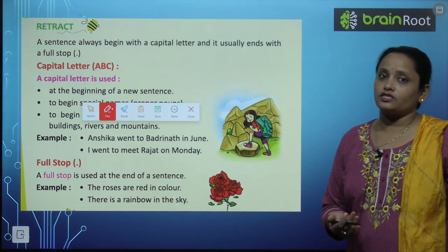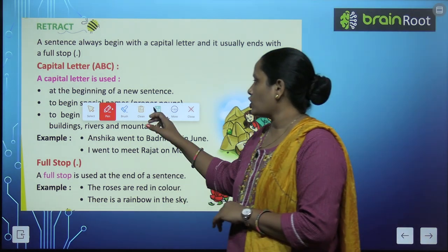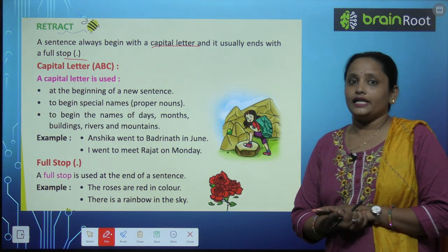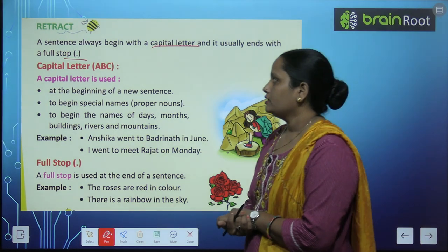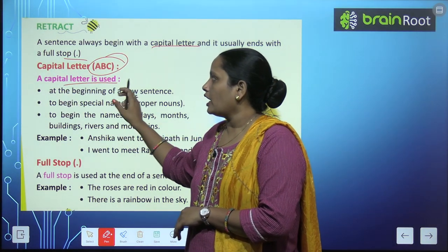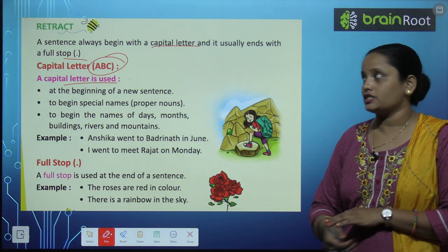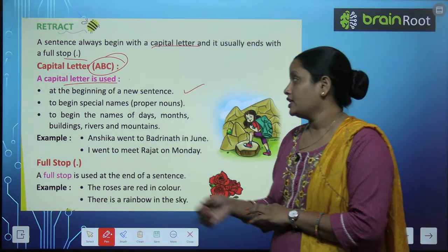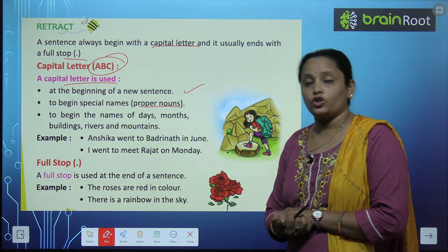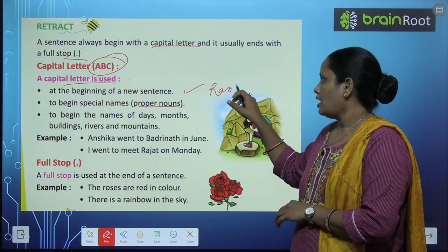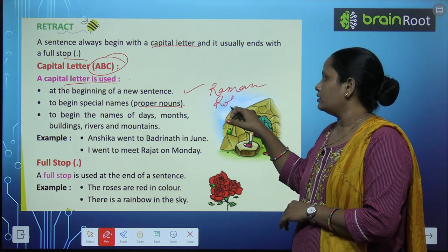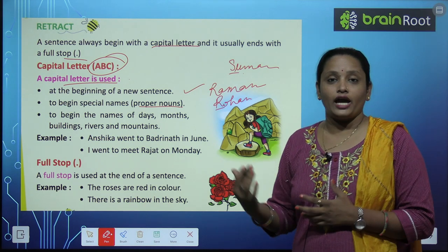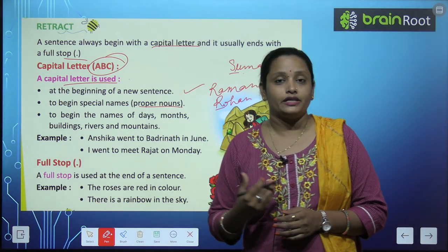A sentence always begins with a capital letter and ends with a full stop. Sentence को हमेशा capital letter से start करना है और full stop से खत्म करना है. Capital letters कौन कौन से होते हैं? A, B, C — these are the capital letters. A capital letter is used at the beginning of a new sentence. To begin special names — किसी भी proper noun या special name को start करना है तो capital letter यूज़ करें. Raman का R capital, Rohan का R capital, Suman का S capital — इनको हमेशा capital letter में ही लिखना है.